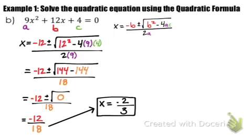We've now seen two cases. If b squared minus 4ac is positive, we get two solutions. If the discriminant is 0, as in this example, we get exactly one solution.